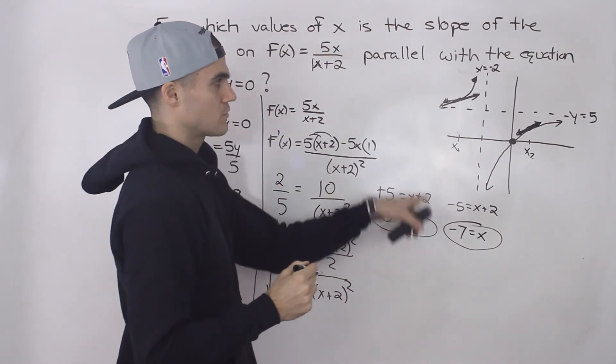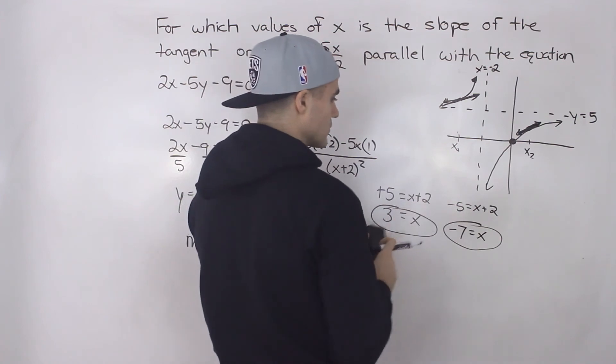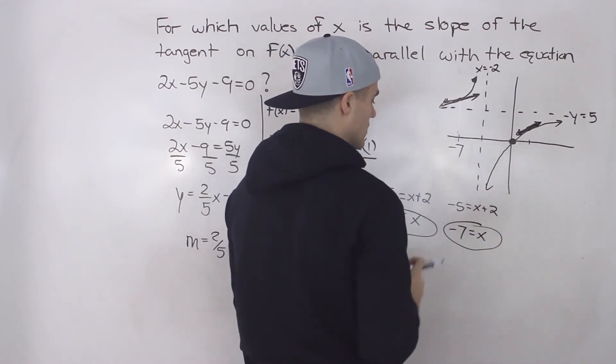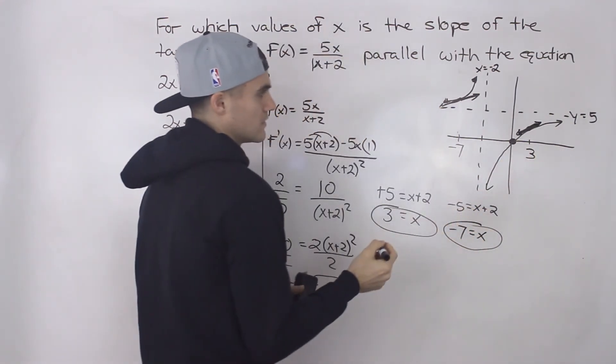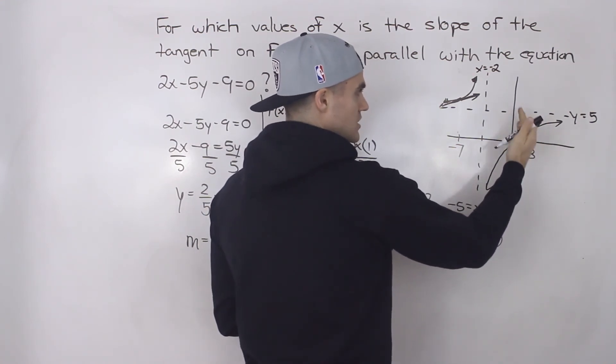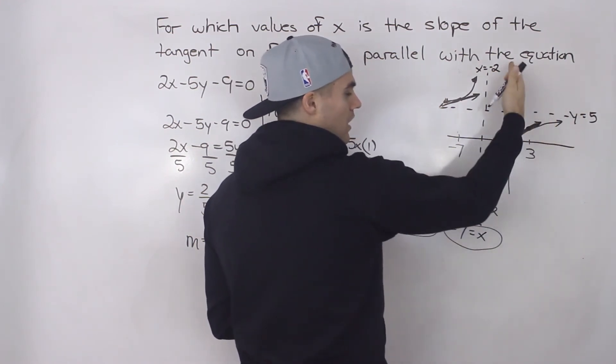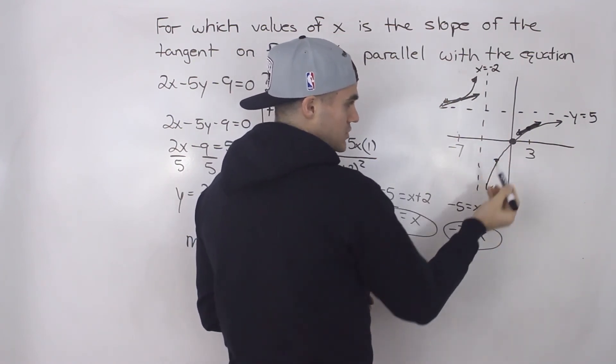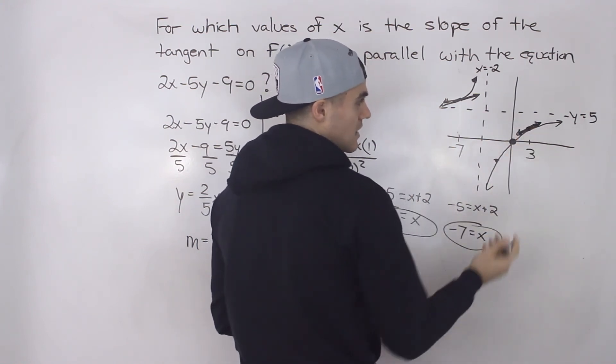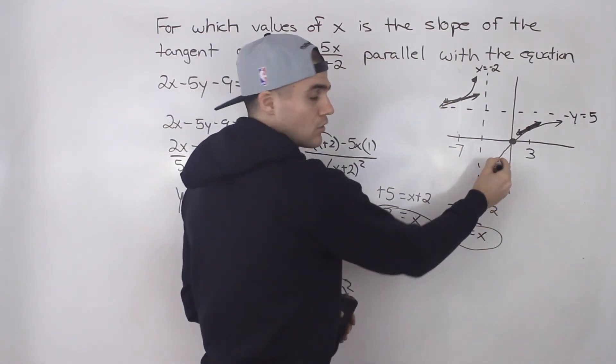And those are your two x values for which the slope of the tangent is going to be 2 over 5. So this x value here is negative 7 and then this x value here is 3. So we were correct in estimating or guessing that the slope of the tangent is going to be 2 over 5 to the right of that axis. It could have also been here potentially because the slopes of the tangents are positive there. But we just guessed there and we are correct because x is equal to 3. If you got an x value of like negative 1, then it would be over here.